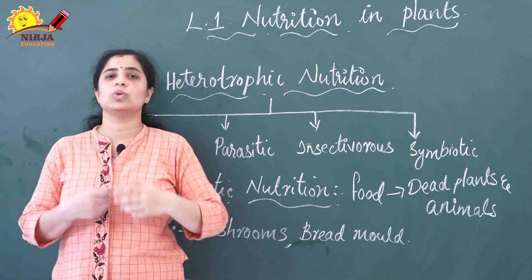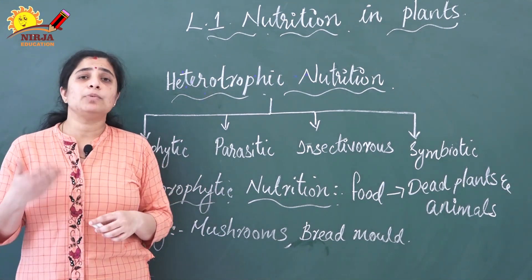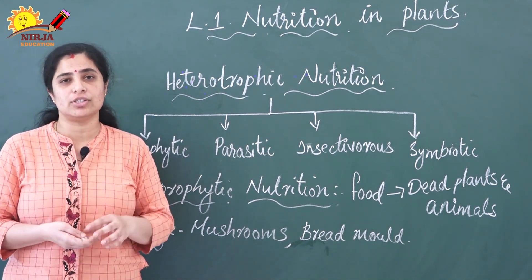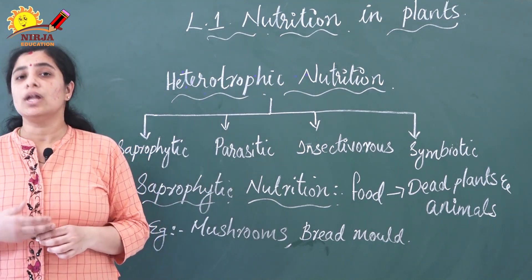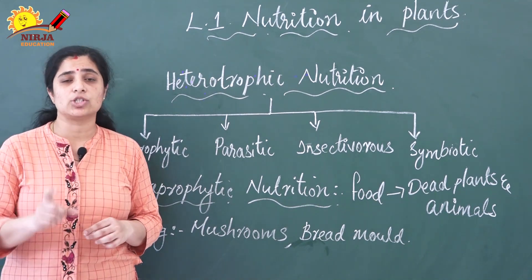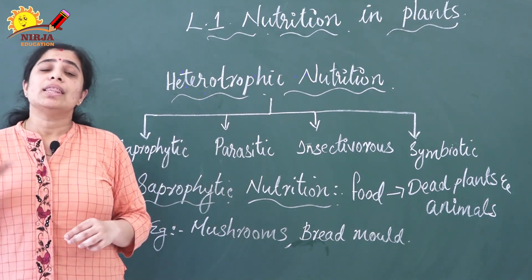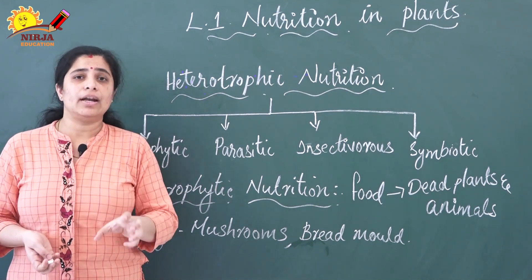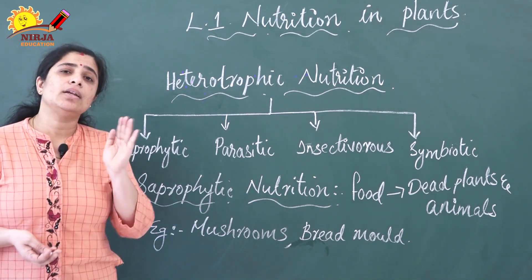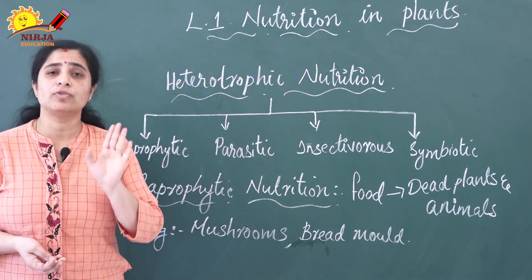I want to ask one question. In some plants you can see red leaves and other colored leaves. Does photosynthesis occur in those plants? Yes, photosynthesis does occur in them. Actually, in those plants the other colored pigments are dominating, which is why you see red, pink, and other colors. But chlorophyll is still present in them, so they can conduct photosynthesis. In heterotrophs, however, there is no chlorophyll and photosynthesis cannot occur.